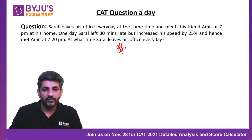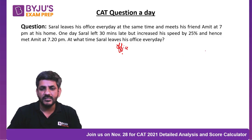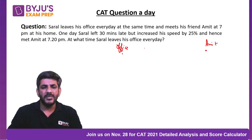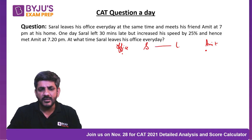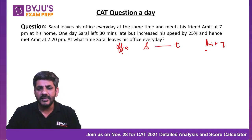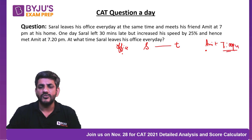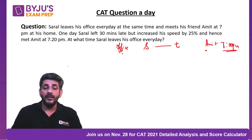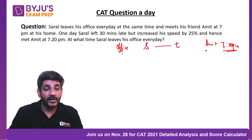Let us say this is the point where his office is, and this is the point where Amit lives. Every day he goes at a speed of S and takes time T to meet Amit, reaching there at exactly 7 PM.